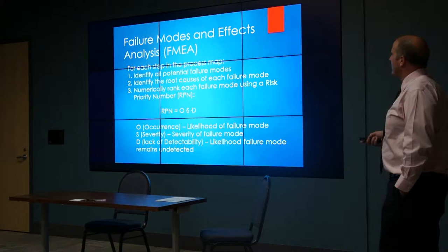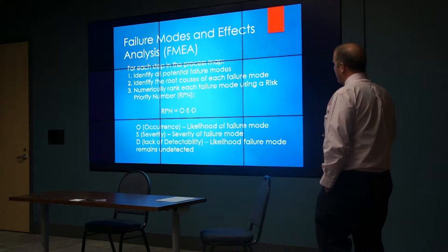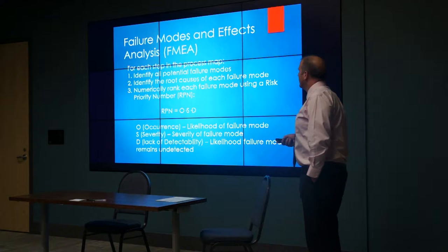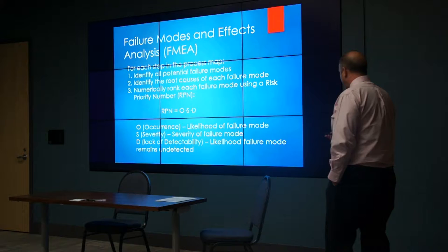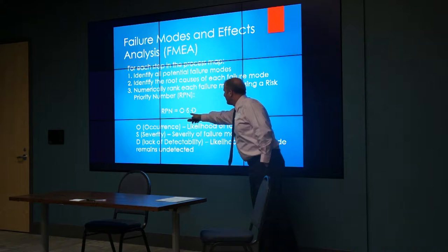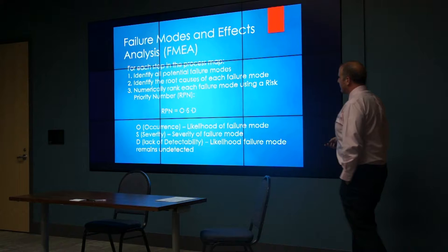Once you have a process set up, the next step is to do a failure mode and effects analysis, or FMEA. In FMEA, you go through each step of the process map and identify all potential failure modes—what could go wrong in this step. Then you identify the root causes for each failure mode—why would this happen. Then you numerically rank each failure mode using what's called a risk priority number, or RPN, which is the product of three separate numbers: O for occurrence, S for severity, and D for detectability, or lack of detectability.